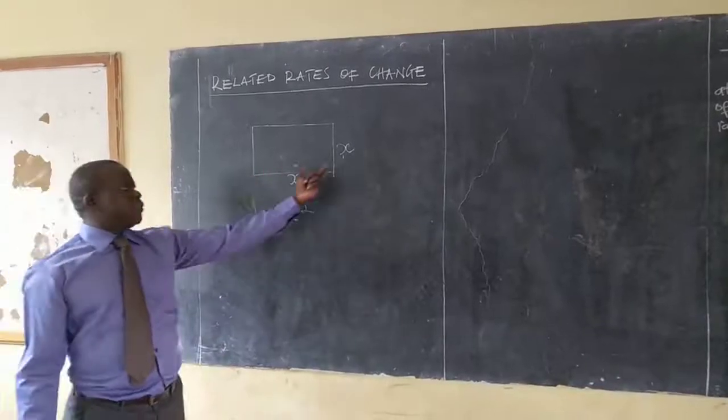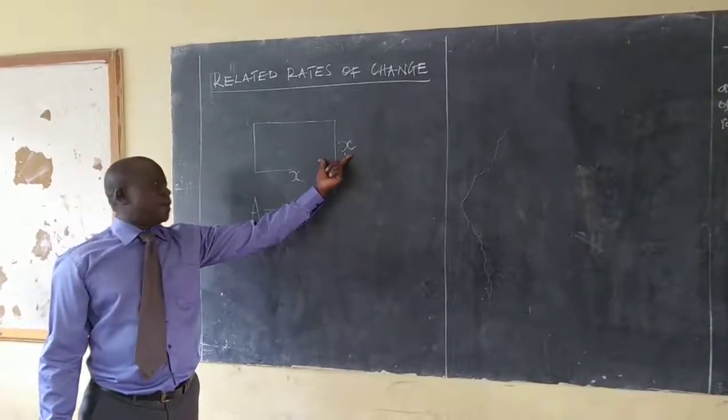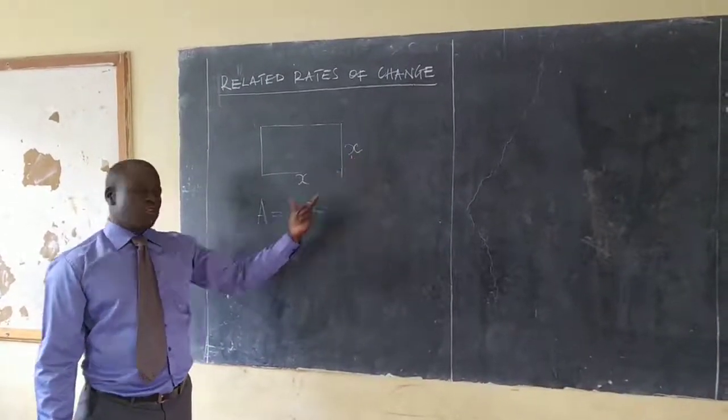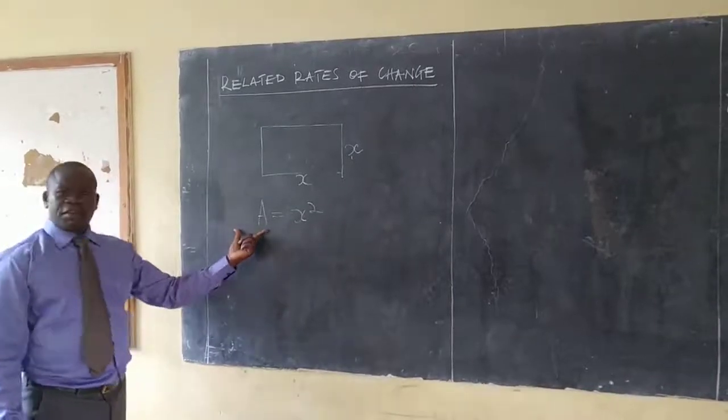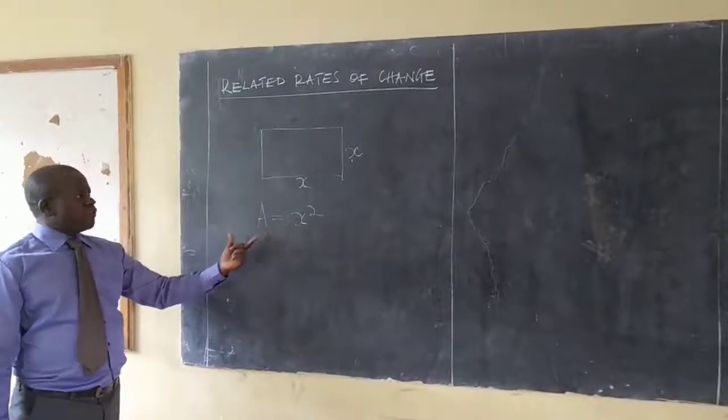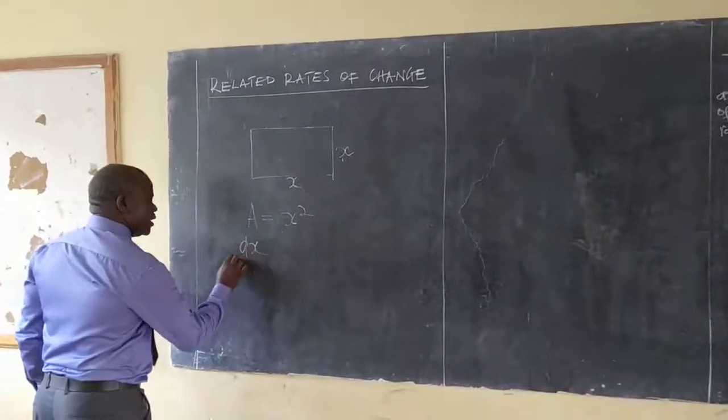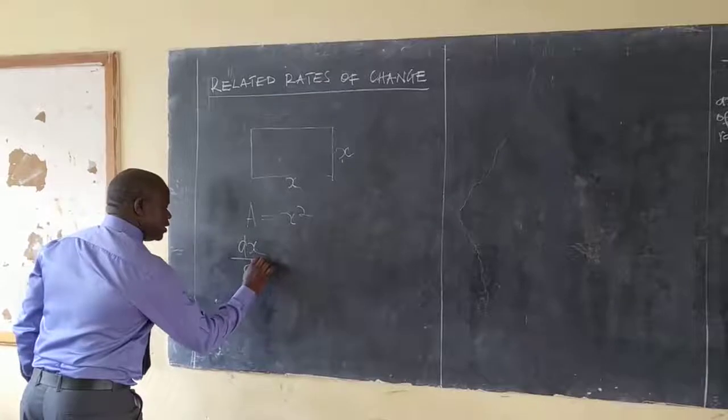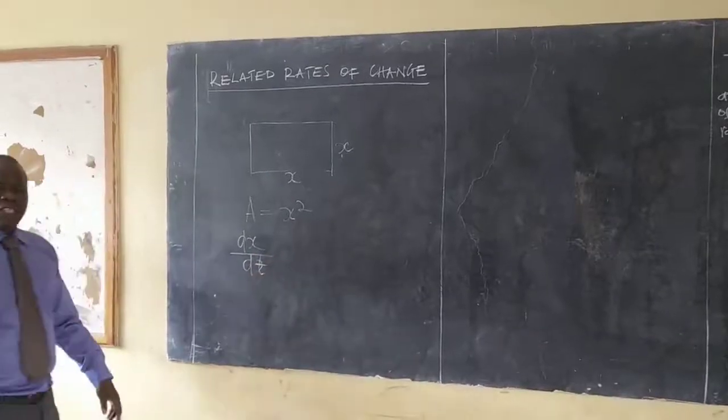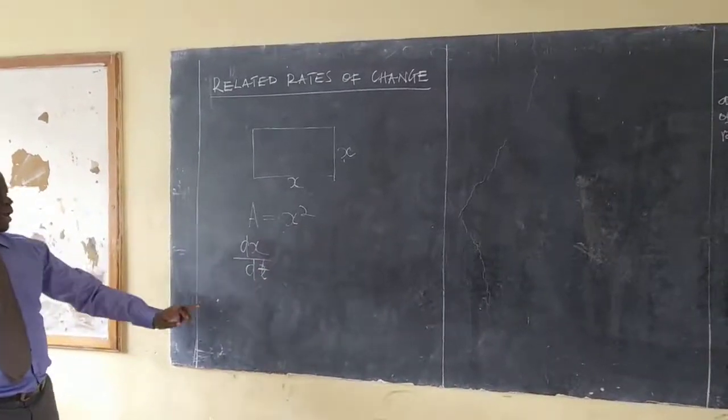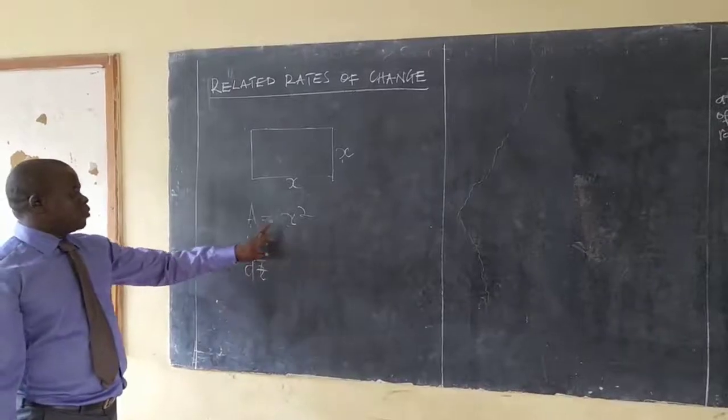So, the rate of change of the size of the square also affects the change in area. So, like for example now, if I know the rate of change of the size as dA/dt, that is the rate of change of size. And now, my area is now equal to x squared.